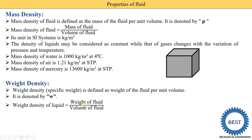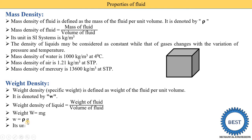Weight density of a fluid equals weight of fluid divided by volume of fluid. Since weight equals mass into gravitational acceleration g, we can substitute: weight density equals (mass into g) divided by volume. Since mass divided by volume is mass density rho, the weight density equation becomes rho into g.